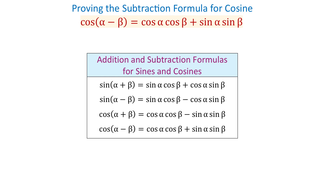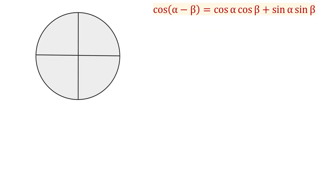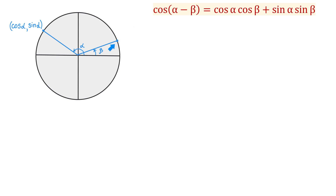To prove this identity, first I will draw the unit circle. Here we have the circle and because we are working with two angles alpha and beta, we will start by drawing angle alpha. I will draw the terminal side of this angle in quadrant two and let angle beta be an angle in quadrant one. The point on the unit circle that corresponds to angle alpha has the coordinates cosine of alpha and sine of alpha, and the point that corresponds to angle beta has the coordinates cosine of beta and sine of beta. If we connect these two points, we will form a triangle with one vertex at the origin.